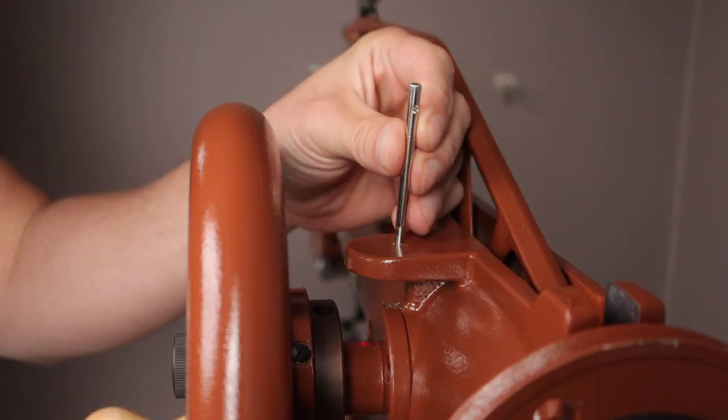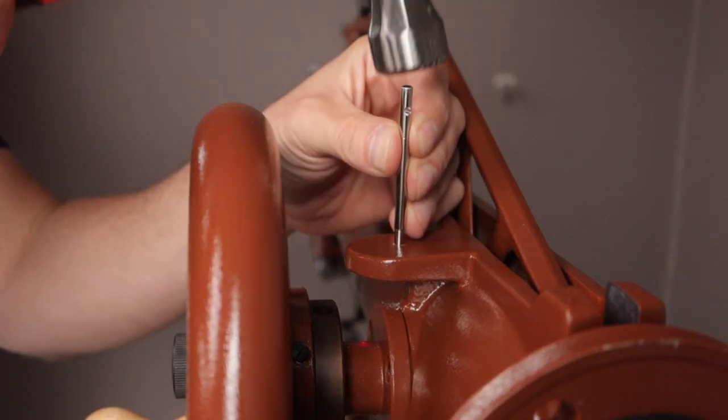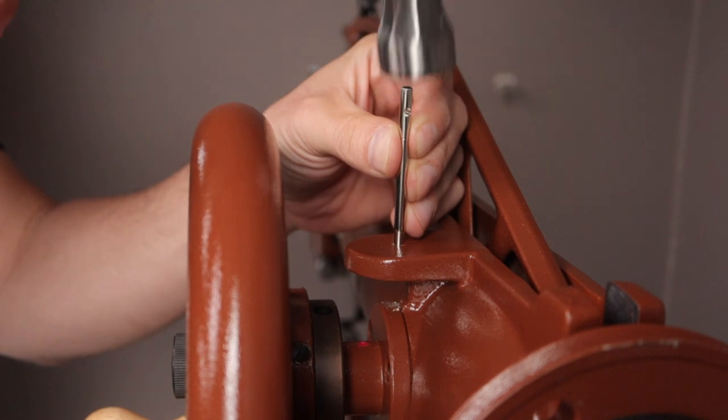The final step is to add the thread guide post. Use a hammer to lightly tap the post into the available hole behind the hand wheel.